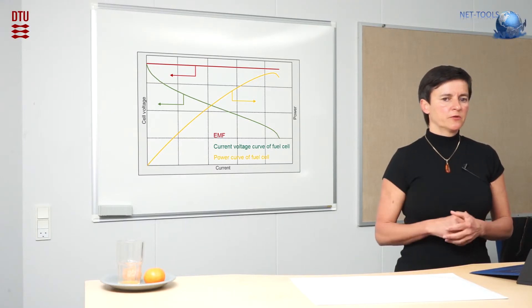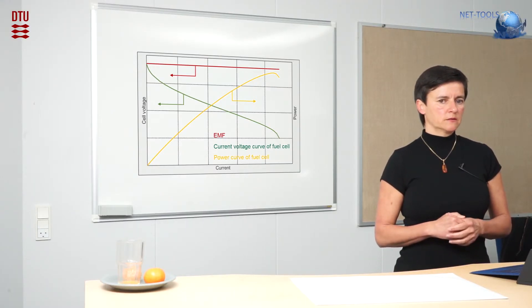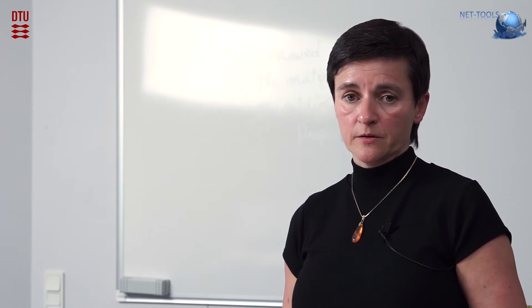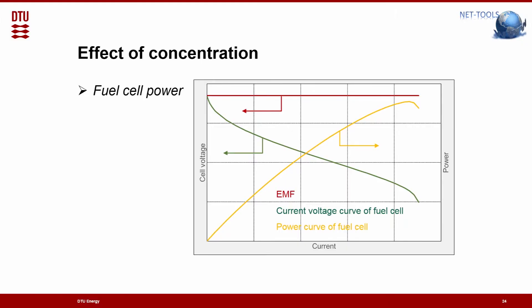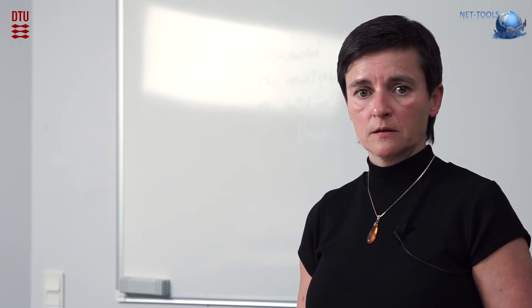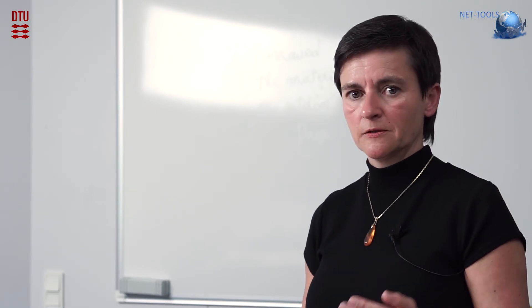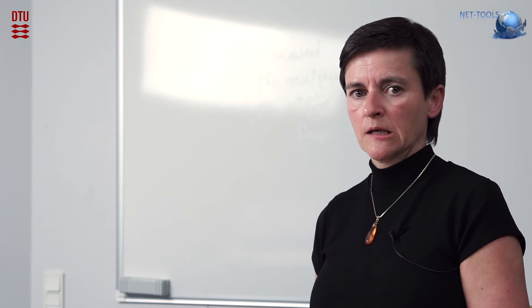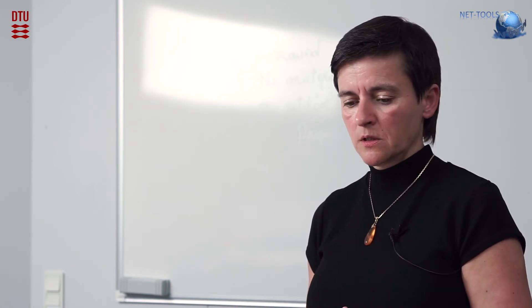That means there is an optimum range where I can draw the maximum power of the fuel cell. When we remember the first equations relating to the efficiency, we saw that the efficiency is highest the higher the cell voltage is. So here we would prefer to go to lower current densities to achieve the highest possible efficiency. Here a trade-off has to be found between the power that I want to extract in watts or kilowatts, versus the electrical efficiency.